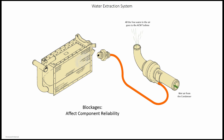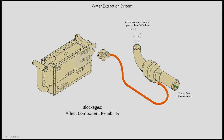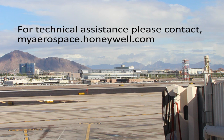A blockage in the drain tube will restrict the extraction of water. The free water in the condensed bleed air cannot be extracted and enters the turbine section of the ACM. Using these maintenance tips will optimize the performance and maintain the reliability of the ECS system.